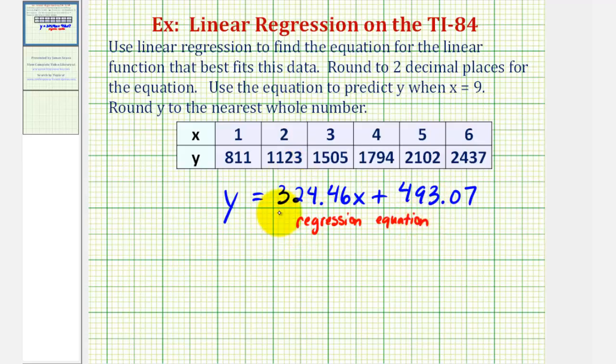We'll now use this to predict y when x = 9. We'll substitute 9 for x to determine our prediction. We would have y = 324.46 times 9, plus 493.07.